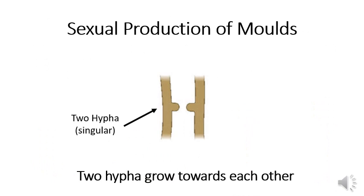Next, we're going to talk about the sexual reproduction of molds. This is called sexual reproduction because it involves two partners. In this case, the two partners are two singular hyphae. To begin the process of sexual reproduction, the two hyphae begin to grow close to one another.